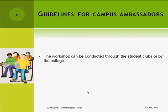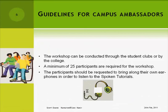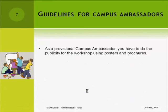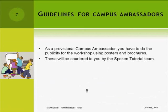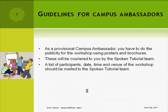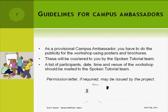The workshop can be conducted through the student clubs or by the college. A minimum of 25 participants are required for the workshop. The participants should be requested to bring along their own earphones in order to listen to the spoken tutorials. As a provisional campus ambassador, you will have to do the publicity for the workshop using posters and brochures. These will be couriered to you by the spoken tutorial team. A list of participants, date, time, and venue of the workshop should be mailed to the spoken tutorial team. A permission letter, if required, may be issued by the project.